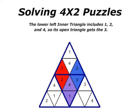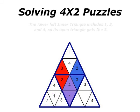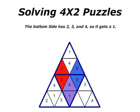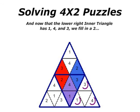The lower left inner triangle includes 1, 2, and 4, so its open triangle gets the 3. The bottom side has 2, 3, and 4, so it gets a 1. And now that the lower right inner triangle has 1, 4, and 3, we fill in a 2, and we're done!